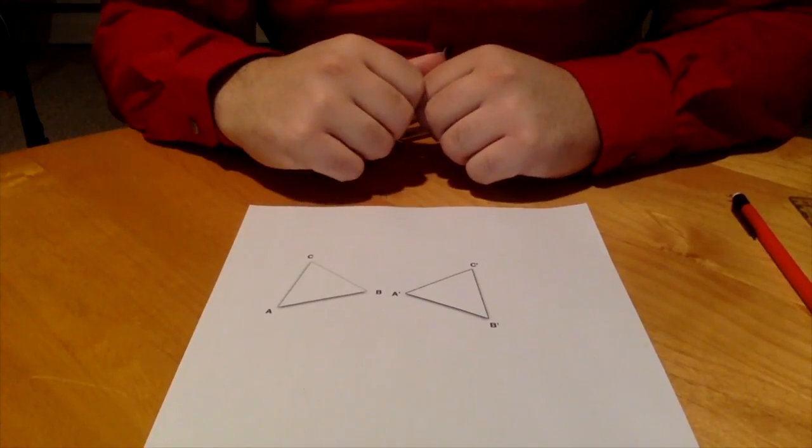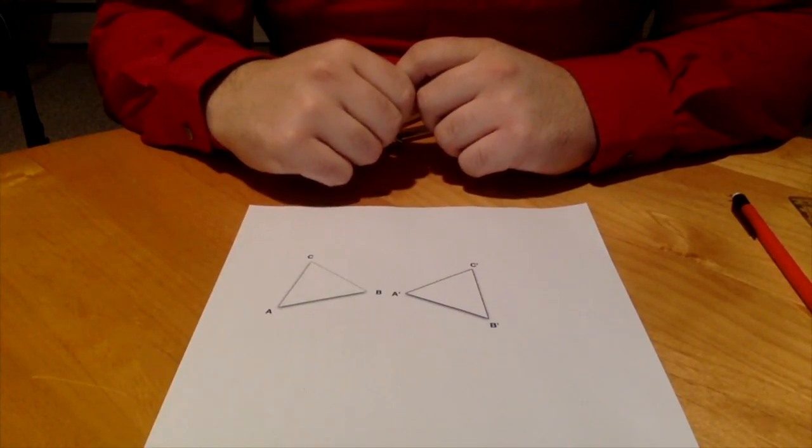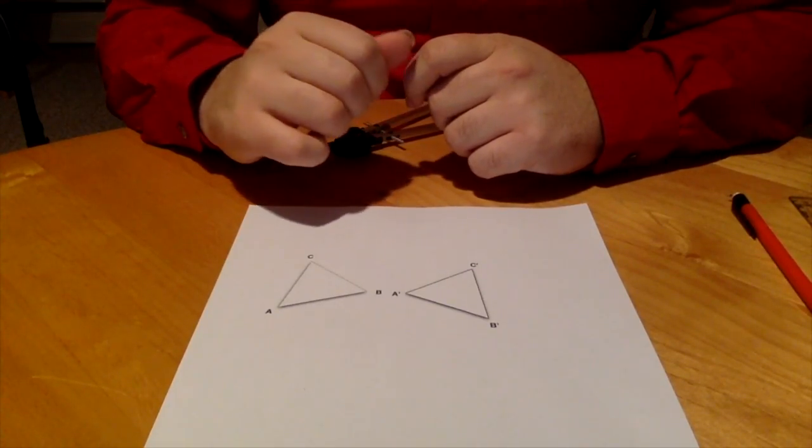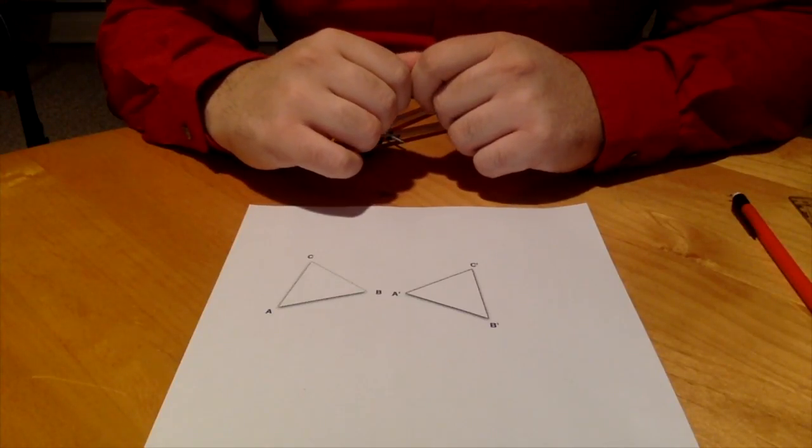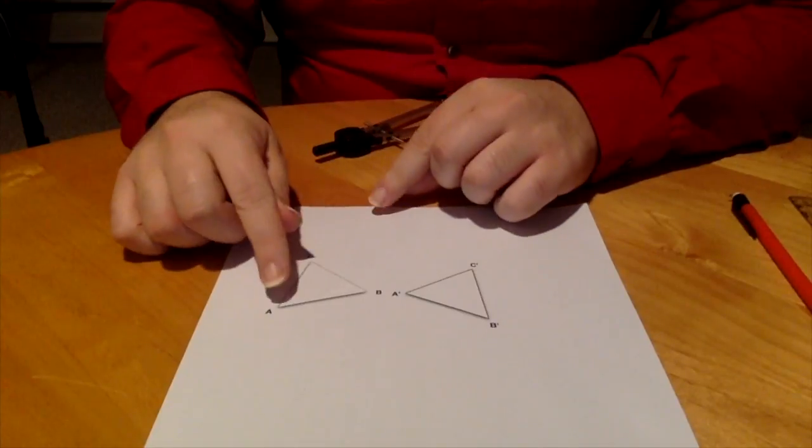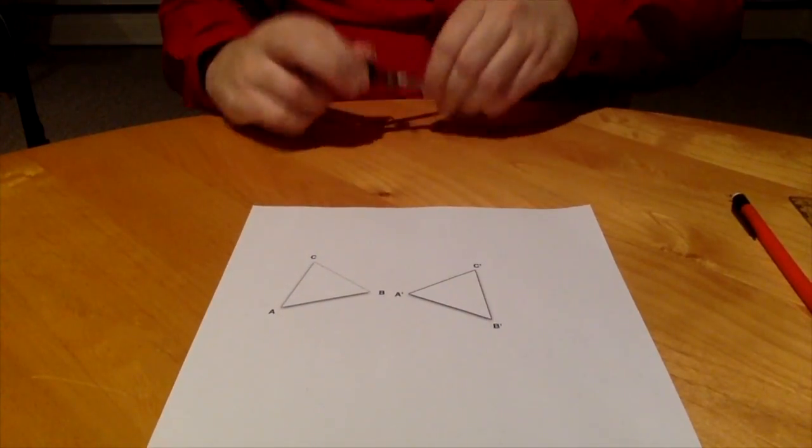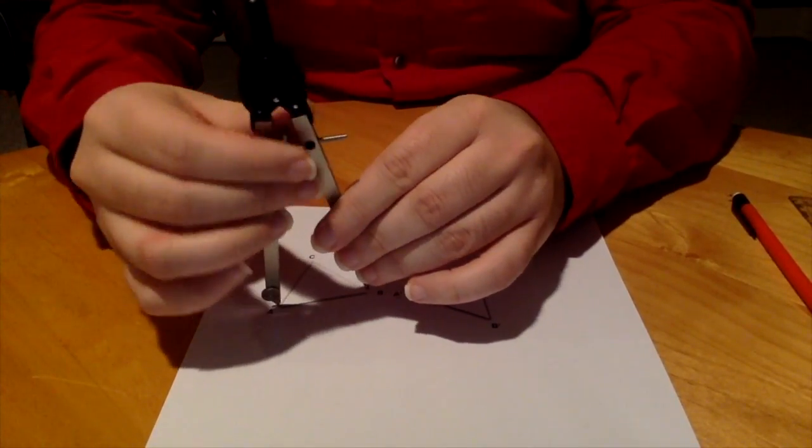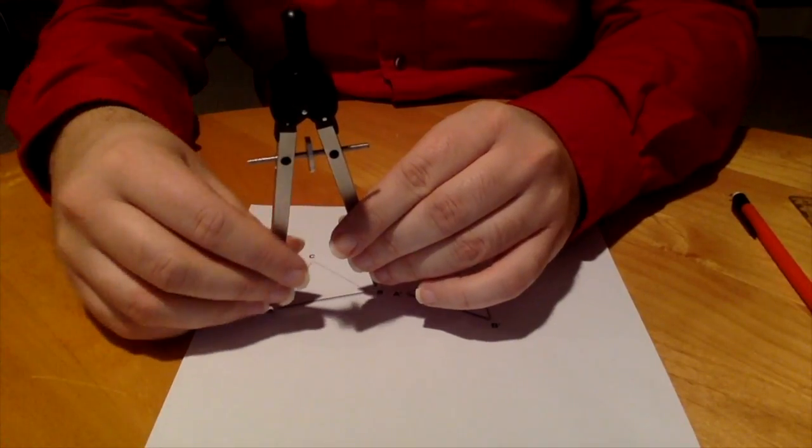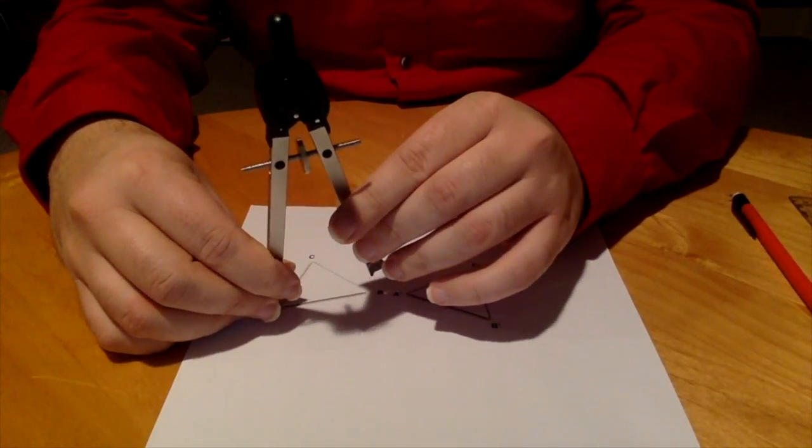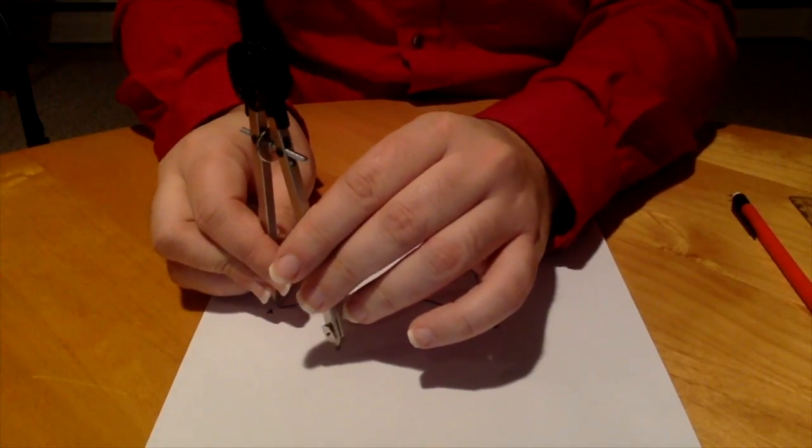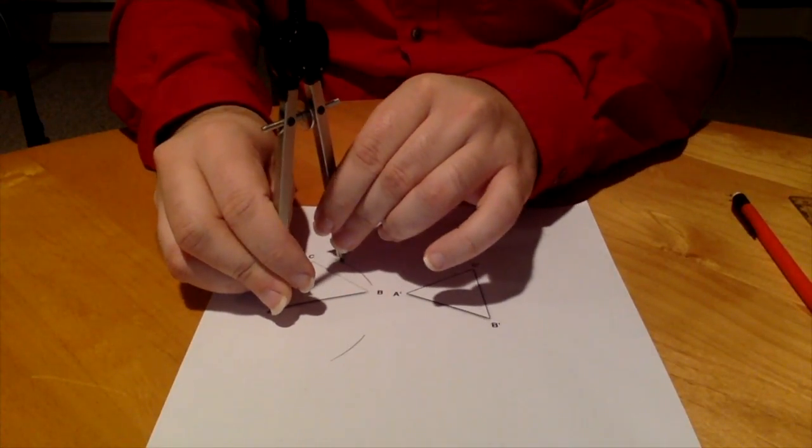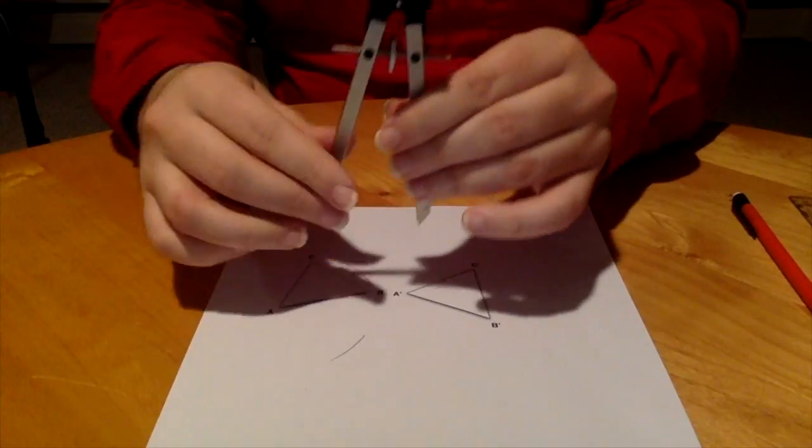And to prove it, we're going to make the center of rotation. So again, this lesson is called perpendicular bisectors. So what we're going to do is create first the perpendicular bisector between a and a prime. You make sure your compass is more than halfway between a and a prime. Put in your point on a, and then you make a curve below and a curve above.